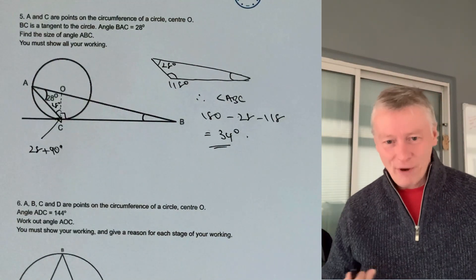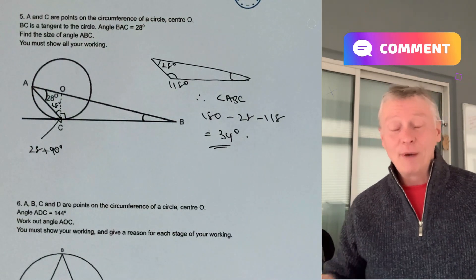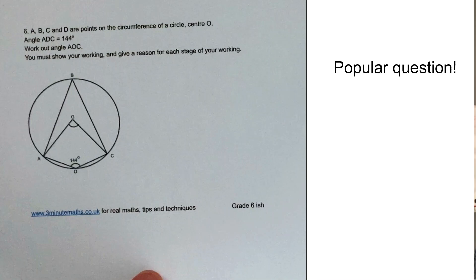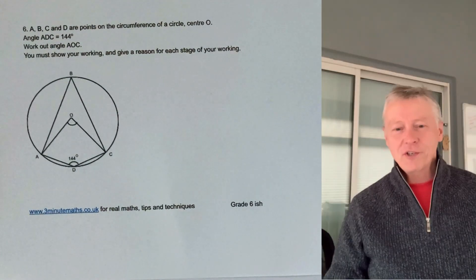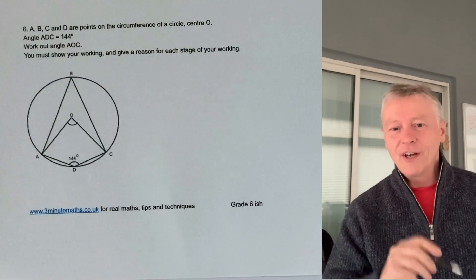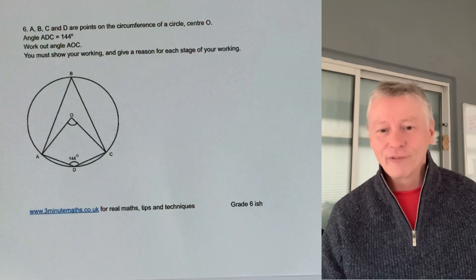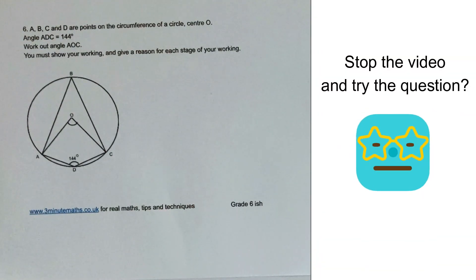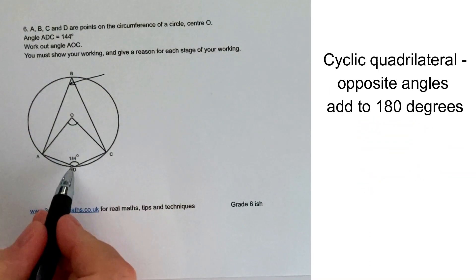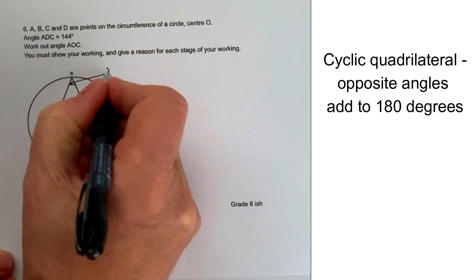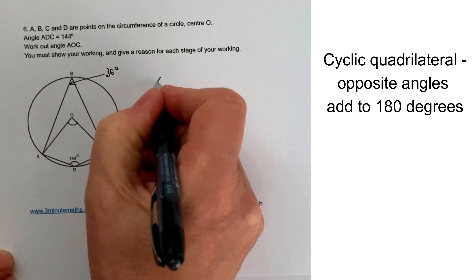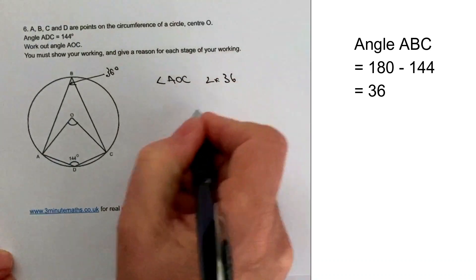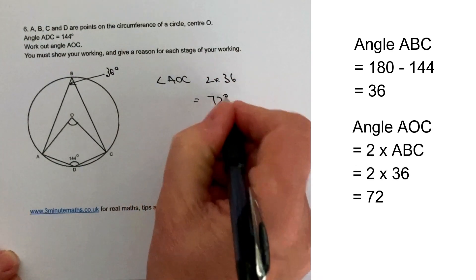Moving on to the next question, this one is again very popular for circle theorem questions. It combines the angle at the centre being double the angle at the circumference, and opposite angles of a cyclic quadrilateral adding up to 180 degrees. That lets us work out the top angle as 180 take away 144, which is 36 degrees. So angle AOC equals two times angle ABC, which is 2 times 36 — giving 72 degrees.